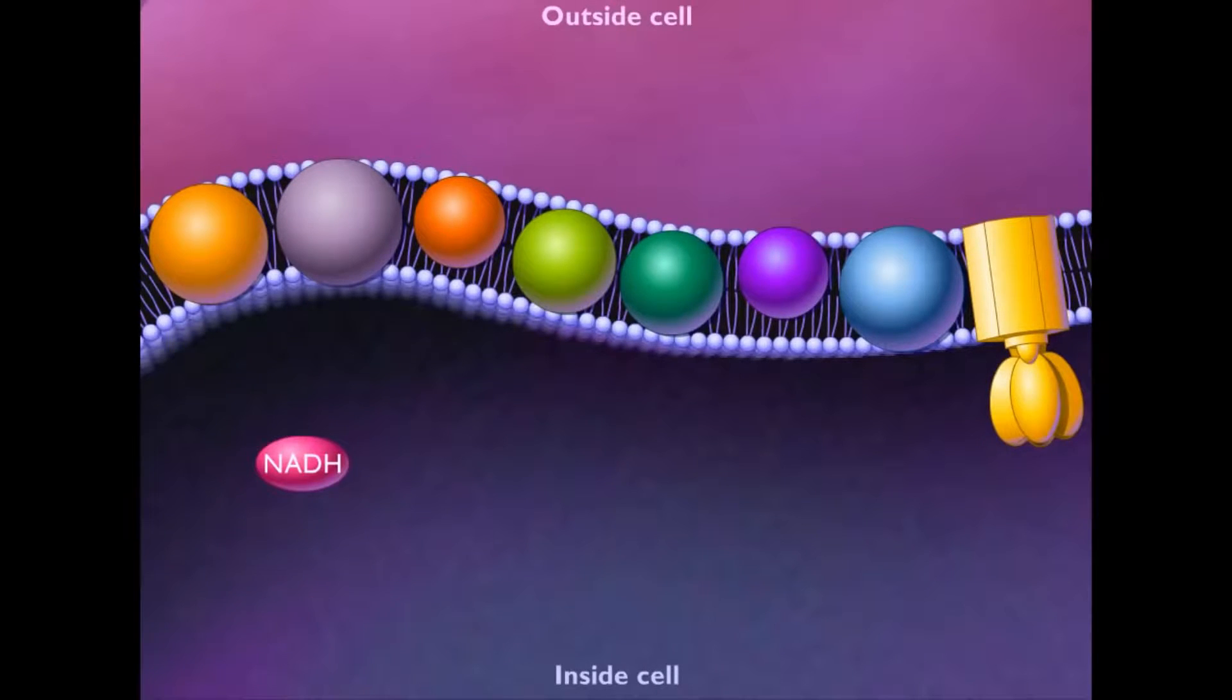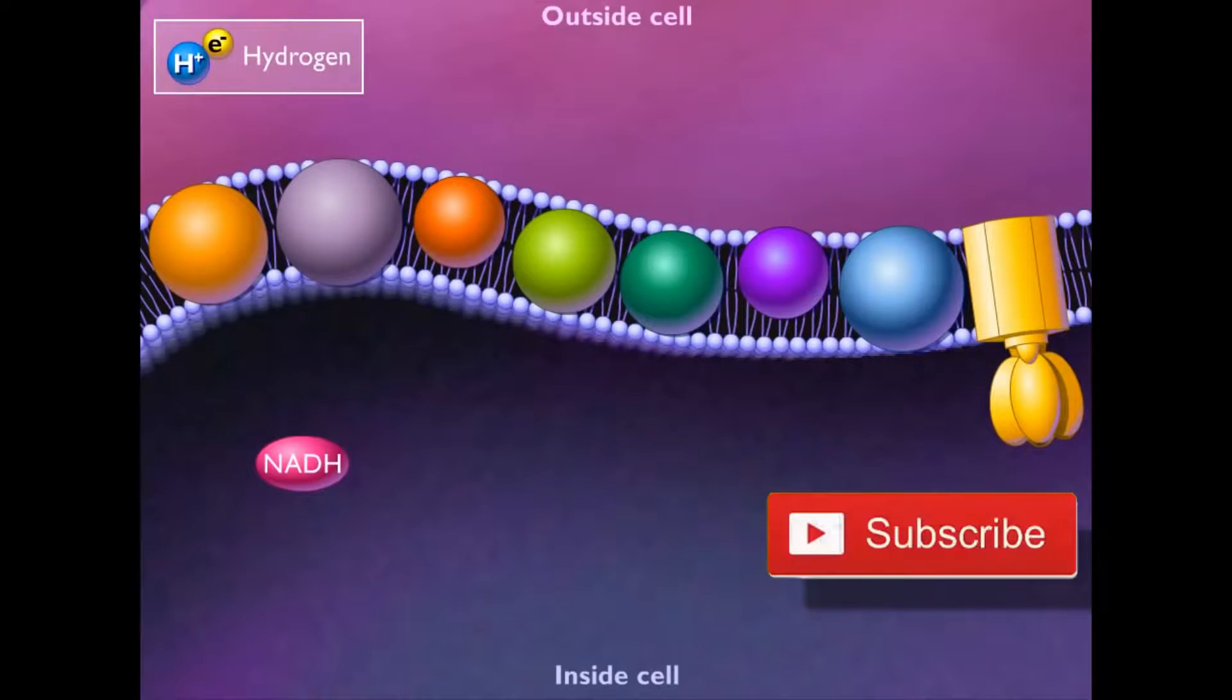These coenzymes transfer hydrogens to the electron transport chain, which is located in the bacterial cell membrane. A hydrogen consists of a proton and an electron.